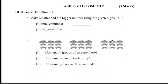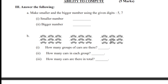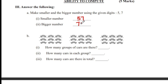The next section is Ability to Compute. Answer the following: make the smallest and biggest number using the given digits. The smaller number is 57, because five is smaller than seven. The bigger number is 75. This one is very, very easy.